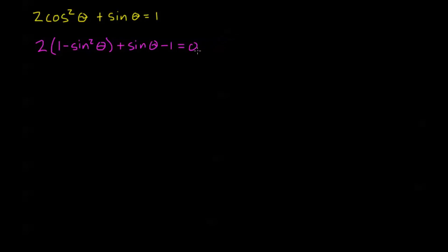Now let's simplify. 2 times negative sine squared theta is negative 2 sine squared theta. I still have plus sine theta, and negative 1 plus 2 gives plus 1, so the equation is equal to zero. I don't like having that negative out in front — when we solve quadratic equations, we like to get rid of those negatives.